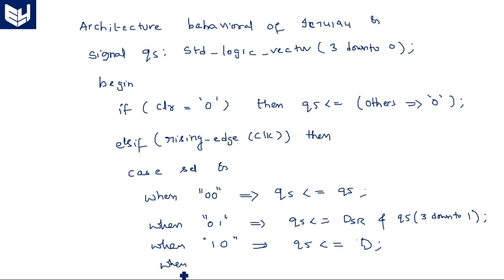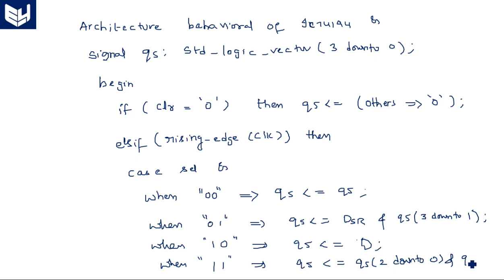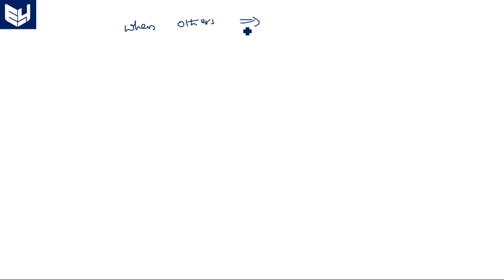When selection is 1,1 — that is shift left operation — QS is assigned QS(2 downto 0) concatenated with DSL, the data input for left shift operation. When others, the result is null. End case. Then Q output is assigned QS. End process, end behavior.